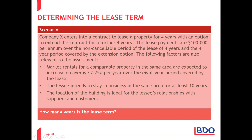Another scenario: a company leases a property for four years with an option to extend for a further four years. Lease payments are $100,000 per year over both periods — no increase. Market rentals for comparable property are expected to increase by 2.7% per year. The company intends to stay in business in the same area for the next ten years, with no compelling reason to move, and the building is ideally located for supplier and customer relationships. The lease term is clearly eight years.